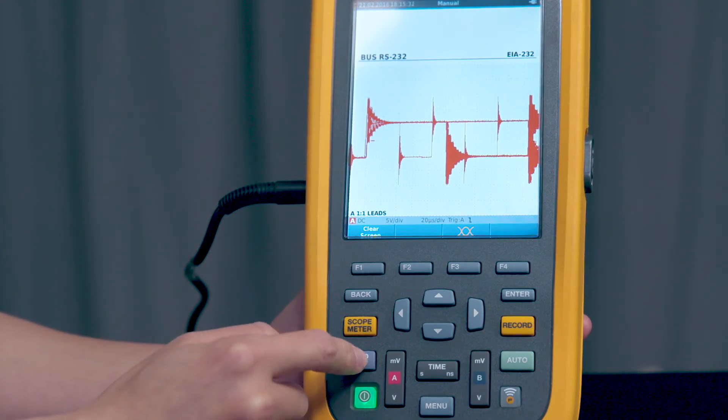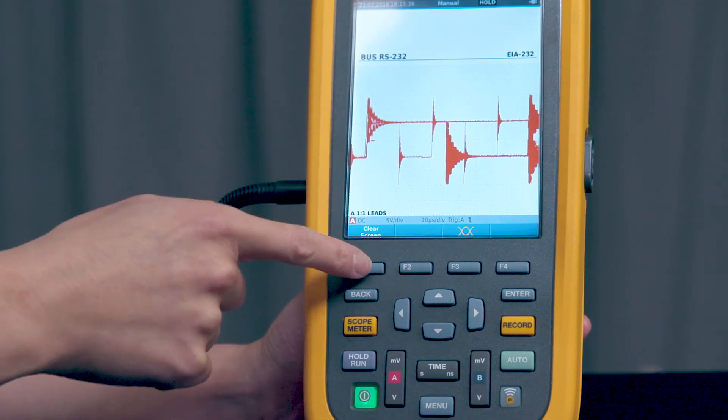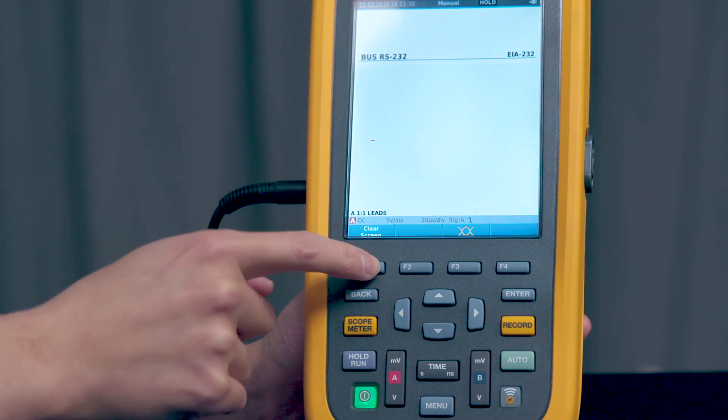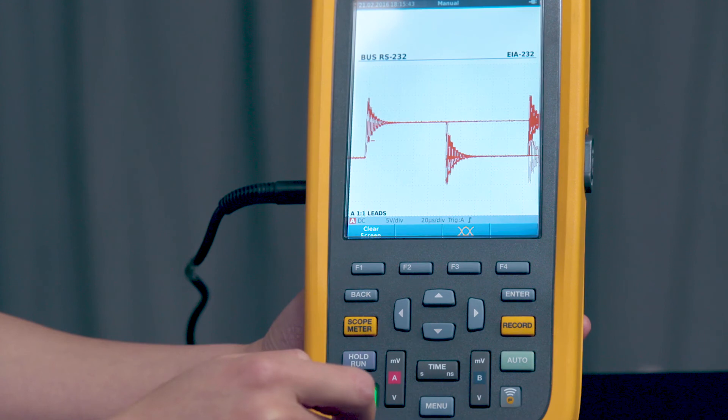If you press the hold run, it'll pause. And then if you press F1 to clear the persistent waveform and then hold run again, it'll start the bit collection again.